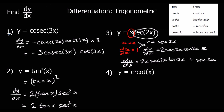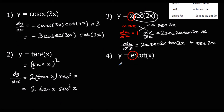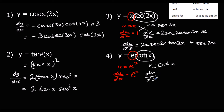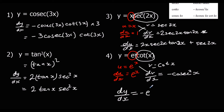Question four: another product rule question. Let u equal eˣ, so du/dx is also eˣ. And v is cot x, so dv/dx — cot differentiates to minus cosec squared — giving minus cosec squared x. Applying the product rule, dy/dx is u dv/dx: minus eˣ cosec squared x, plus v du/dx: eˣ cot x. And that's the answer.